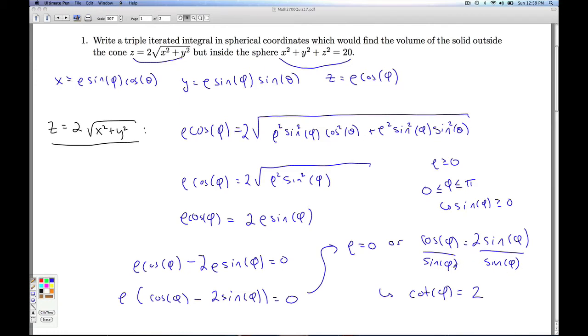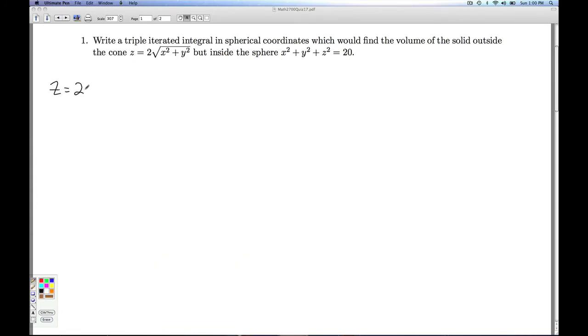And I get cotangent of phi equals 2. Now, by dividing by sine of phi, I have to make sure I'm not excluding values for phi. I could be excluding phi equals 0 and phi equals pi. But if the cotangent of phi is 2, phi can't be 0 or pi. Now, we don't know an angle off the top of our head whose cotangent is 2. But phi has to be an angle from 0 to pi with a cotangent of 2. So I can go ahead and just write phi as the arc cotangent of 2.